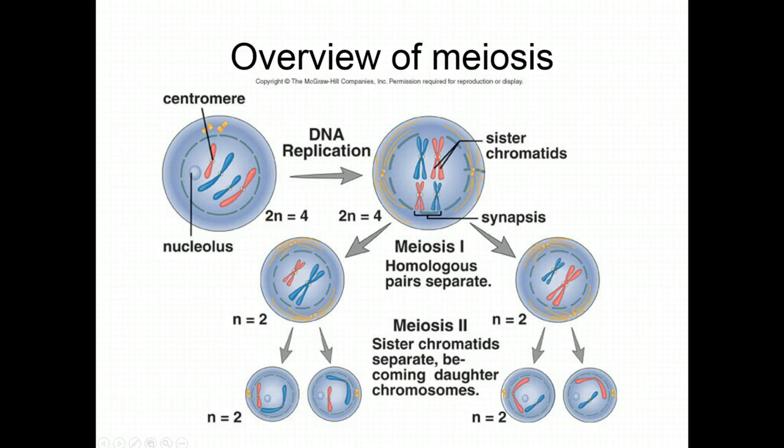The cells are haploid after meiosis 1 because we cut the chromosome number in half. However, we still have to get rid of the chromatids, which is why we have to do a second round of cell division called meiosis 2.